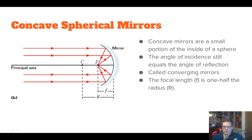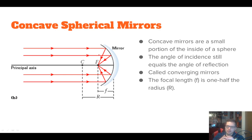Concave mirrors and convex mirrors are curved mirrors we're going to talk about today. Both of these mirrors are a small portion of the inside of a sphere. If you continued the lines around the mirror, they would make a circle, and C would be the center of it. These mirrors are just a portion of that sphere, and we can use them for all sorts of different applications.